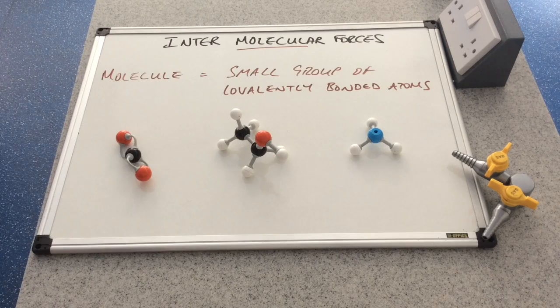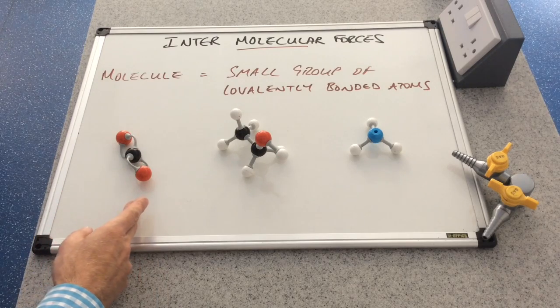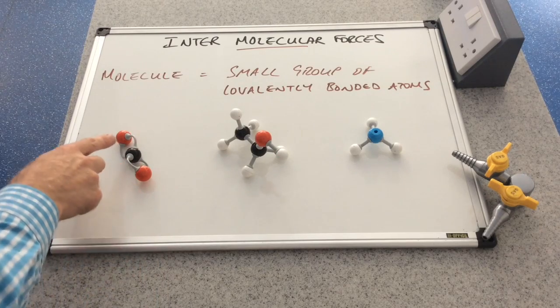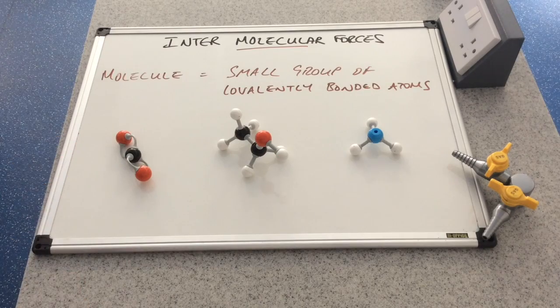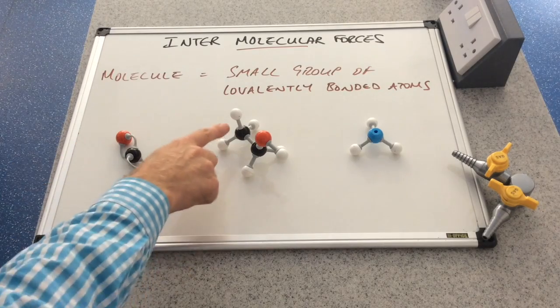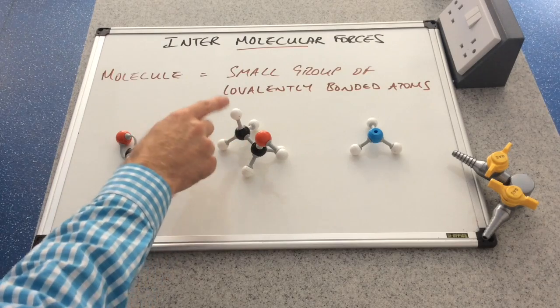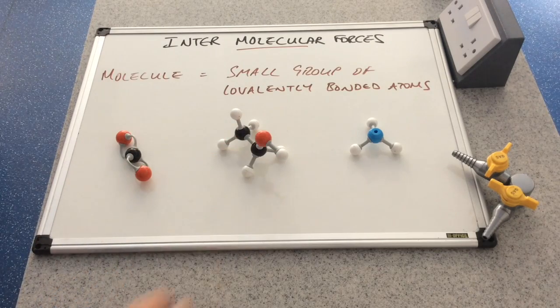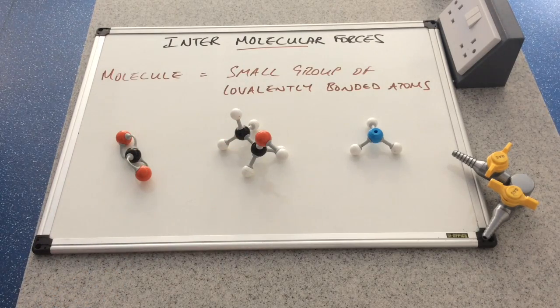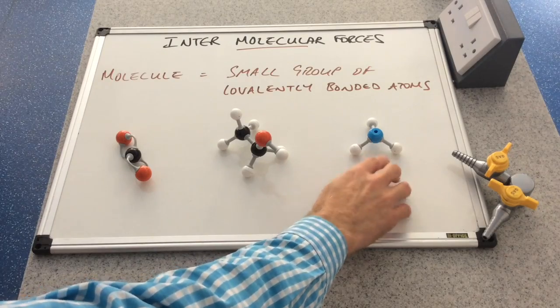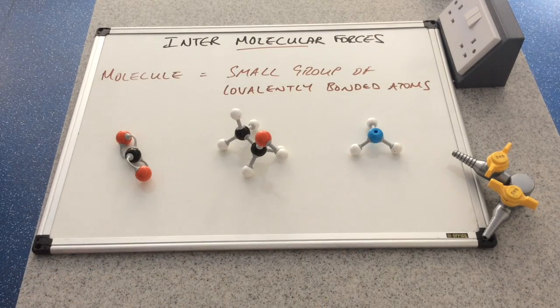So going from left to right, we've got carbon dioxide, which basically just contains three covalently bonded atoms. We've got ethanol, which contains nine covalently bonded atoms. And we've got ammonia, which contains four covalently bonded atoms.